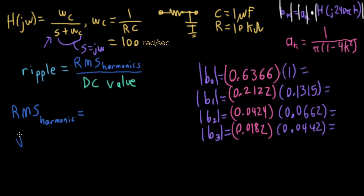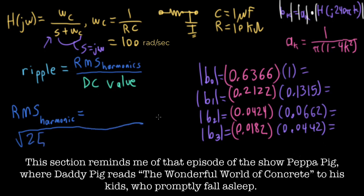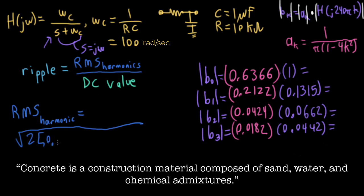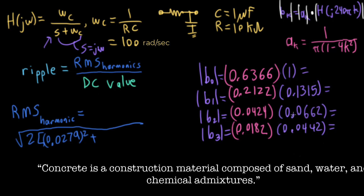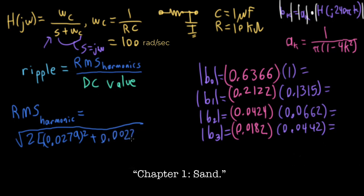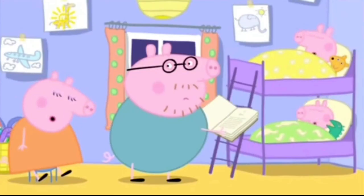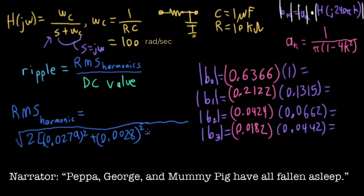This all equals a bunch of stuff. Let me go ahead and put the stuff over here. So the RMS value winds up being square root of 2 times a bunch of stuff. And that stuff, the 0.2122 times 0.1315 gives us 0.0279, and I need to square that. b₂ winds up being 0.0028, or I should say the magnitude of b₂, and I wind up squaring that.